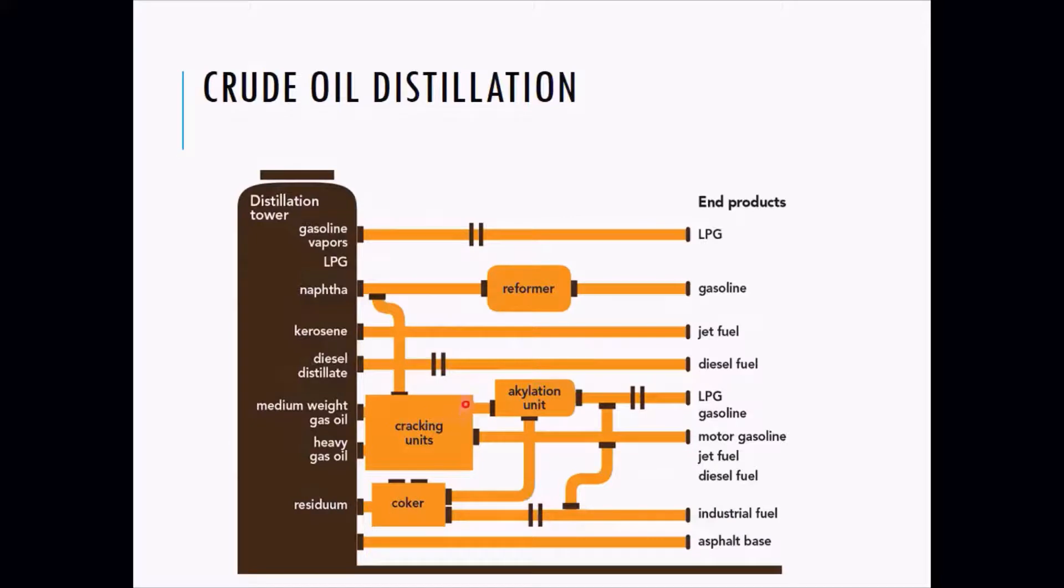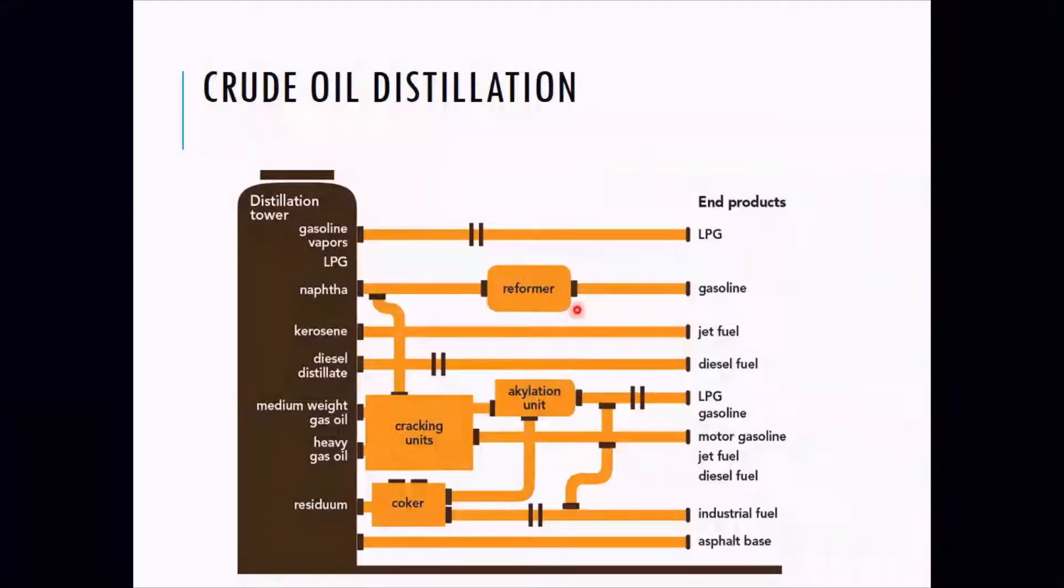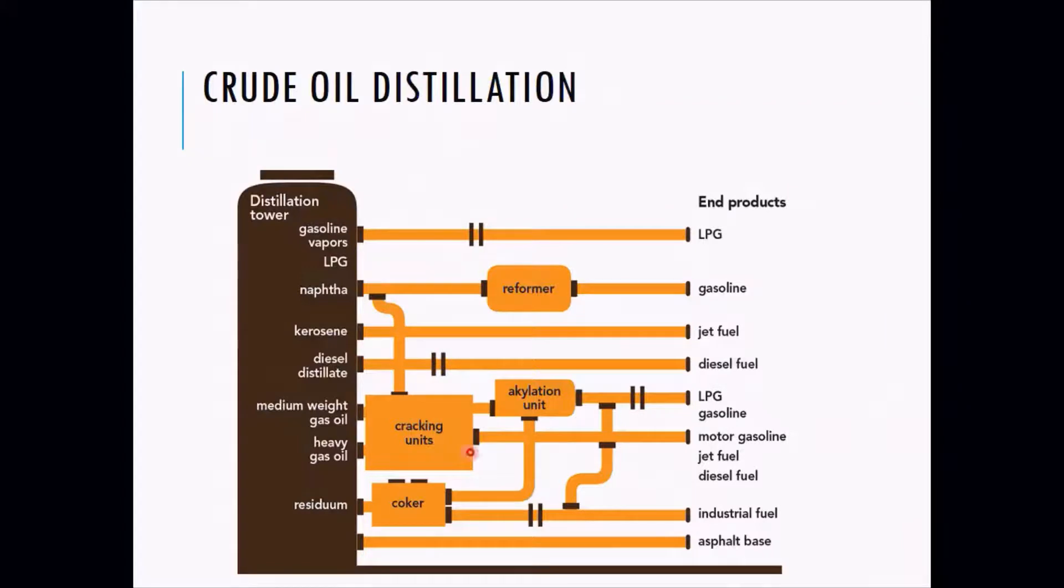Talking about the technicality of the refinery, after the distillation tower, in order to get gasoline there are still some more processes which happen. It is called the reforming process. There will be some cracking units, some alkylation units, and some cokers which are used in order to get the asphalt.